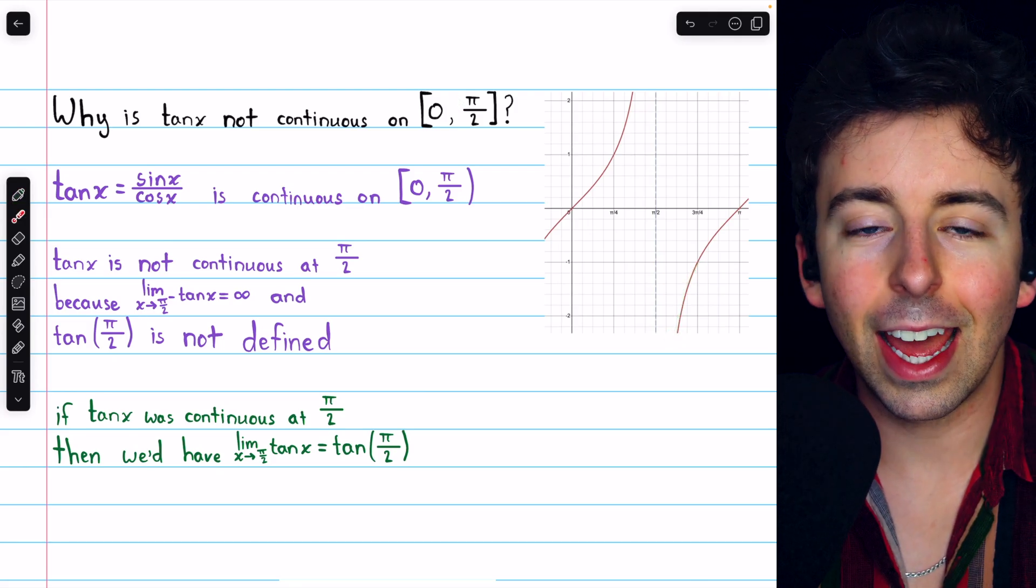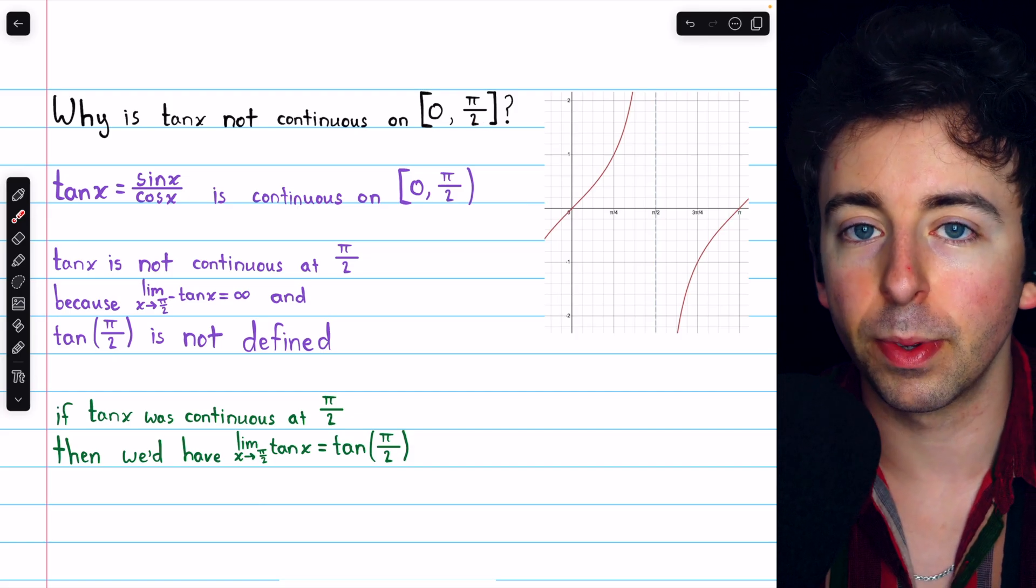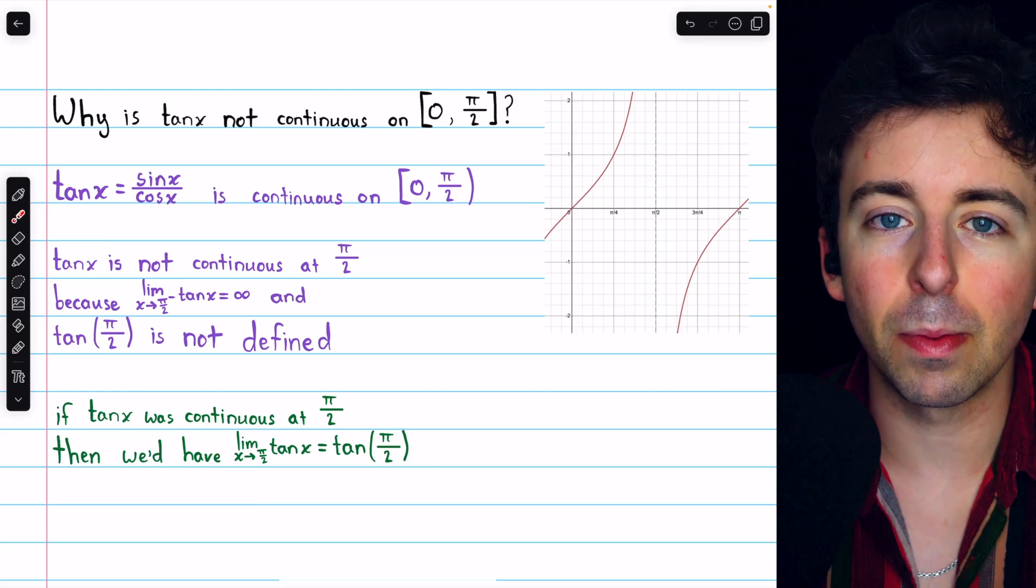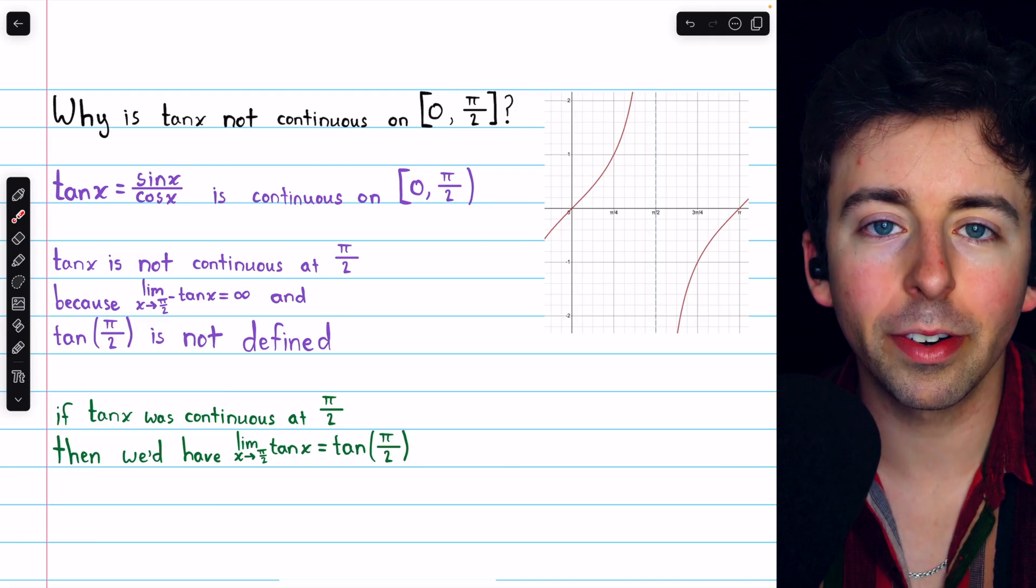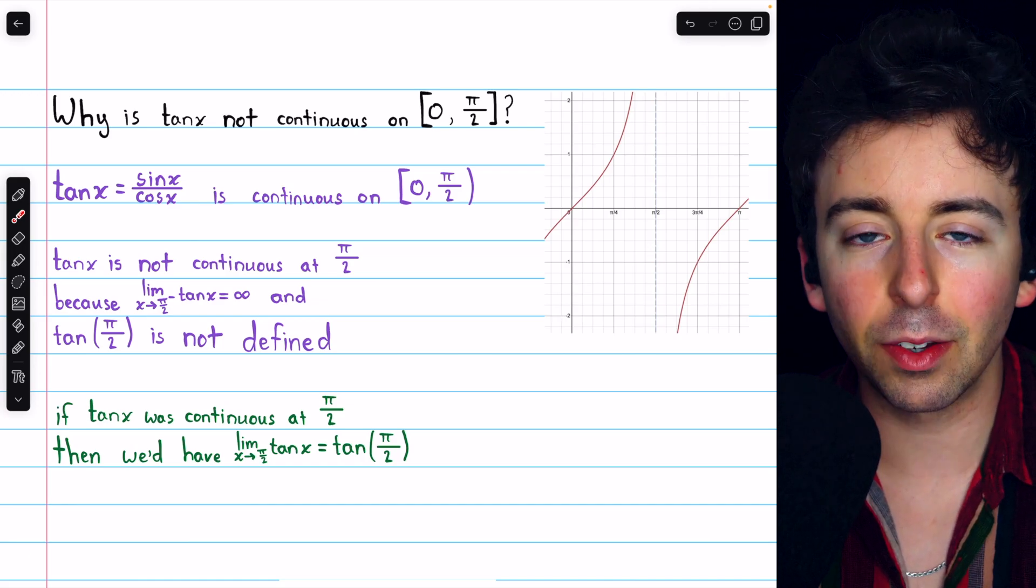But that's just a brief discussion on tan x and its continuity on this closed interval and at pi over 2 specifically. I hope this helped you understand the definitions involved here a little bit more clearly. Let me know in the comments if you have any questions, and be sure to check out my Calculus 1 course and Calculus 1 exercises playlists in the description for more. Thanks for watching.